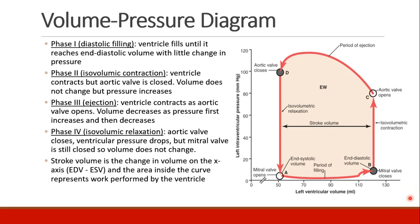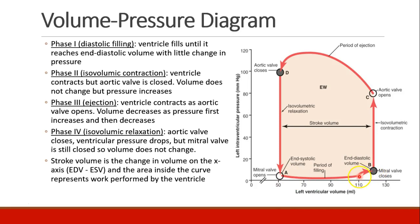The next very important concept is the volume-pressure diagram. This diagram shows the left ventricular volume on the x-axis, and the left intraventricular pressure on the y-axis. We're going to walk through all of the steps of the cardiac cycle. Starting at point A, we have diastolic filling. The heart fills from a low volume to a high volume once the mitral valve opens, and blood can pour in from the atrium. There's a little bump in pressure —